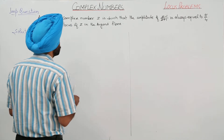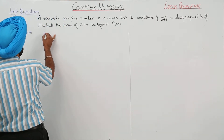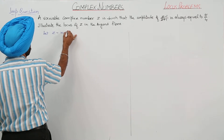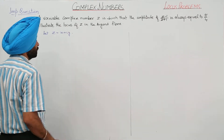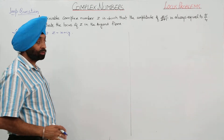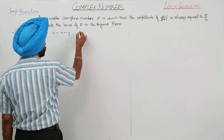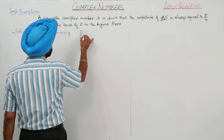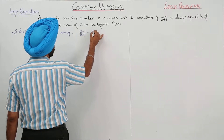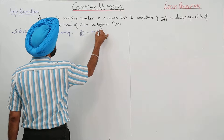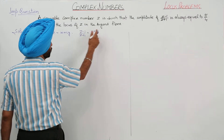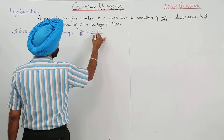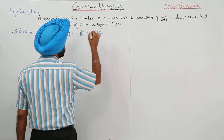Let z equal to x plus iota y. We have supposed that z is a complex number x plus iota y. So z minus 1 upon z plus 1 equals x plus iota y minus 1, upon x plus iota y plus 1.